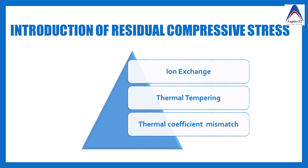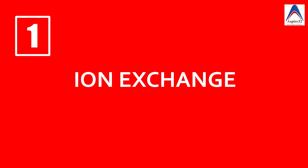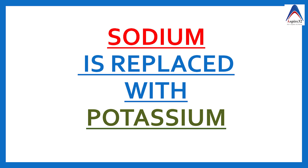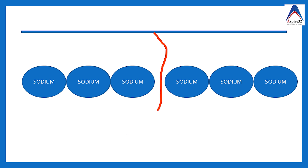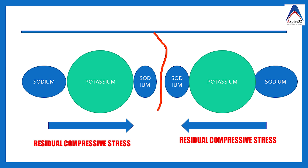The first method is ion exchange, also called chemical tempering, in which smaller sodium ions are replaced with potassium ions that are 30% larger in size. This creates a tremendous amount of compression that generates a force trying to close the cracks in the ceramic, as can be well appreciated in the corresponding image.